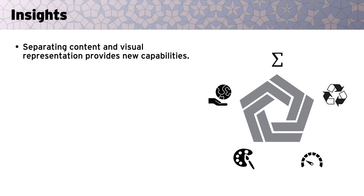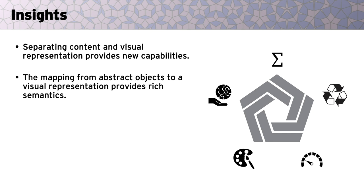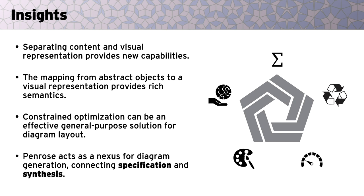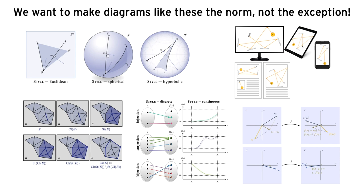Splitting a diagram specification into content and visual representation appears to be critical for providing new capabilities. For instance, it makes it easy to evolve large collections of diagrams, and for novice users to benefit from the wisdom of expert diagrammers. A deeper insight is that in this context, the meaning of an abstract mathematical idea or relationship is totally determined by our rules for visualizing it. So diagrams produced using constraint-based optimization naturally reflect deeper facts about the objects themselves. We found also that numerical optimization provides a surprisingly general-purpose solution to diagram layout. Overall, Penrose acts as a nexus for diagram generation, providing a way to connect diagram specification to diagram synthesis. We hope that our system can help make beautiful diagrams like these the norm, not the exception.